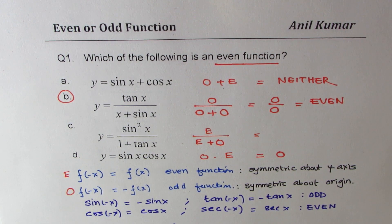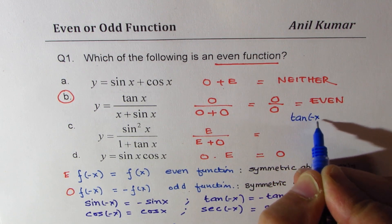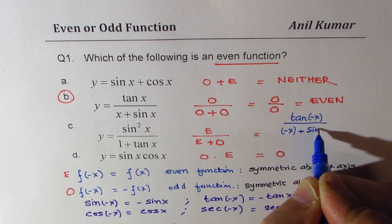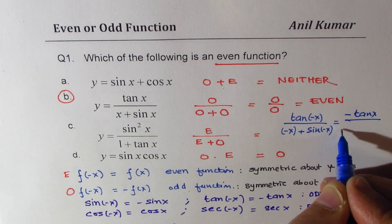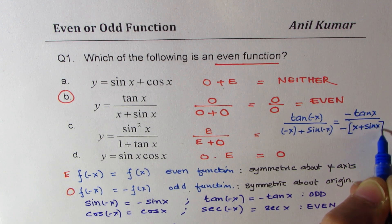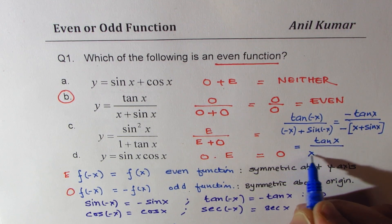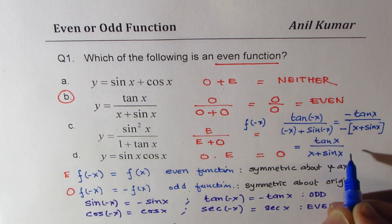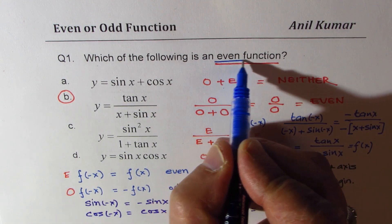Now what you can do here is also work it out, just to check. So we could do tan of minus x over minus x plus sin of minus x. So what you get here will be minus tan of x divided by, if you take minus common, you will get x plus sin x. And that will result back to the function itself, which is tan x over x plus sin x. So what we see here is that f of minus x is equal to f of x, and therefore this particular function is the even function.